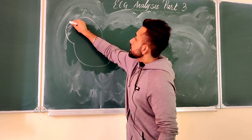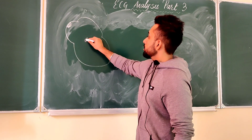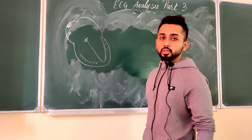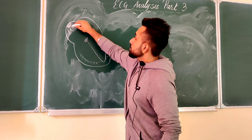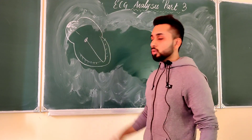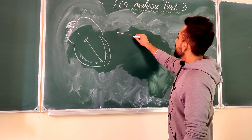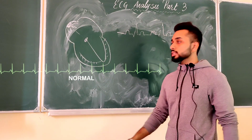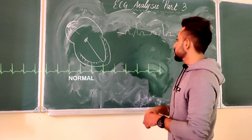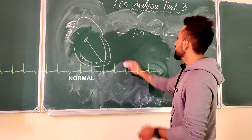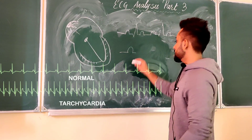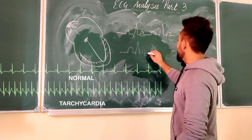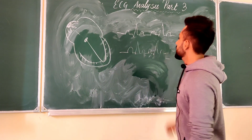I'll draw the conduction pathway once again. In the right atrium lies the SA node, then we have the AV node, bundle of His, and Purkinje fibers. When impulses originate from the SA node and travel to the AV node, bundle of His, and Purkinje fibers, you get a normal ECG. When impulses are still originating from the SA node but conducting at a very rapid rate, you have sinus tachycardia — everything being the same, just at a very rapid rate.